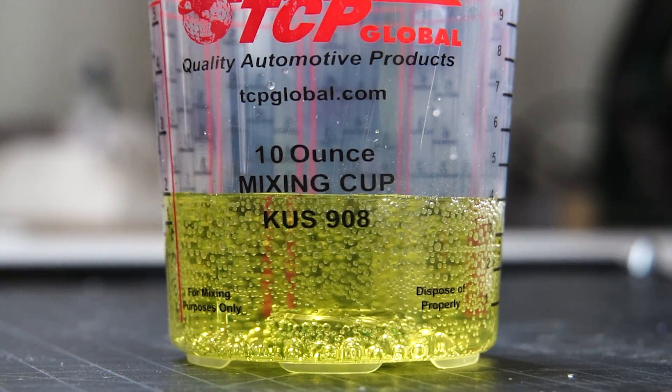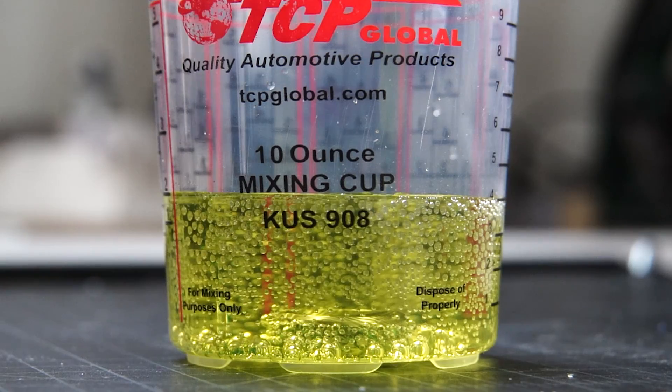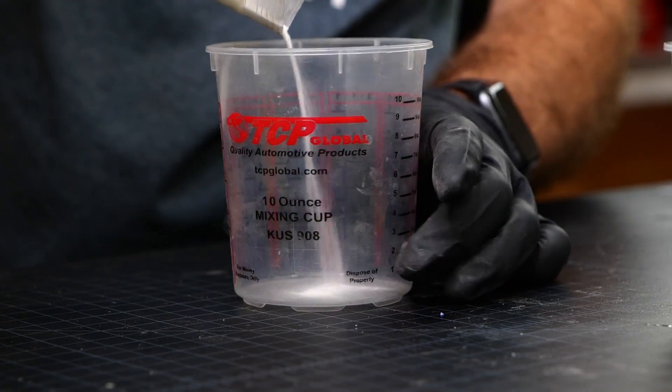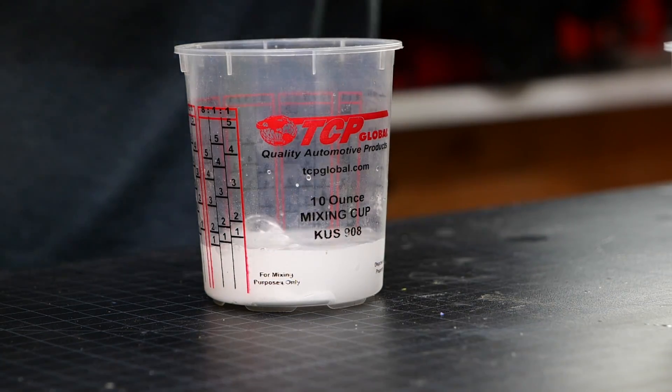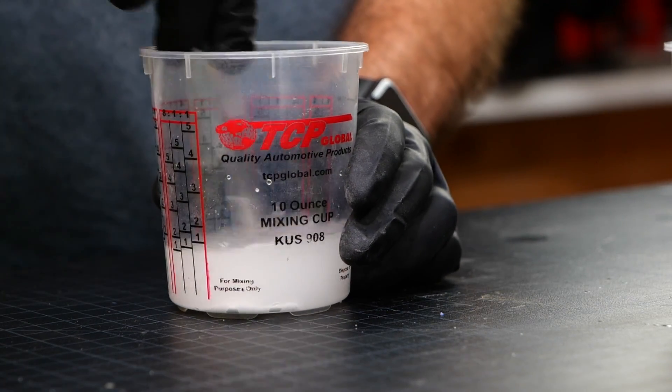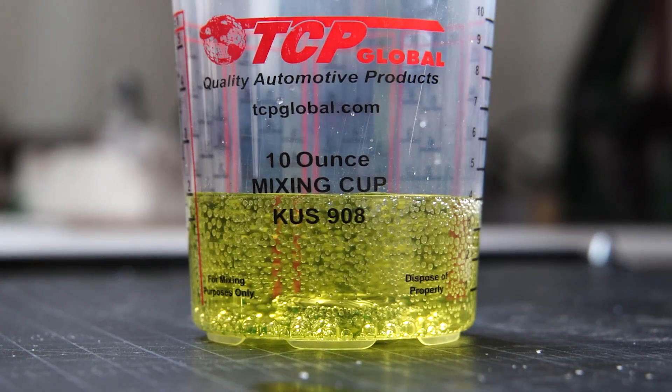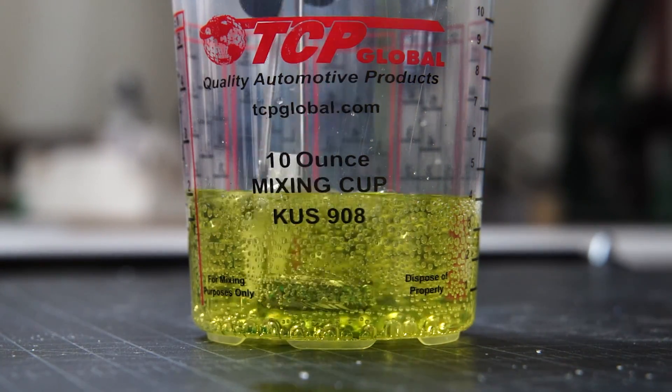Now once the etching is done, you need to neutralize the acid. So you're going to take the ring and you're going to want to put it in some baking soda water. That will neutralize the acid, make sure that it's safe to touch. Also a side note, you should just keep a box of baking soda handy while you're doing this. If you have any acid spills, you need to immediately neutralize it with baking soda.